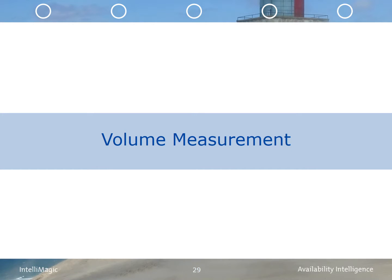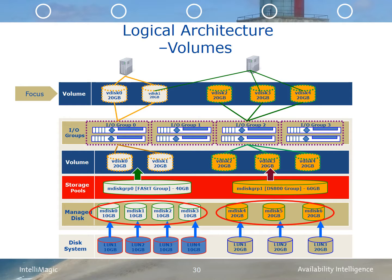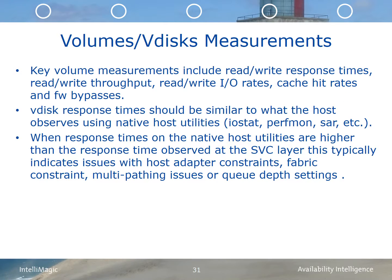In this section, we'll discuss the SVC VDISKs or volumes and their measurements. The volumes are provided by coalescing extents from storage pools. Hosts access the volumes through IO groups that they are zoned to. Key volume measurements include read-and-write response times, read-and-write throughput, read-and-write IO rates, cache hit rates, and fast-write bypasses. VDISK response times should be similar to what the host observes using native utilities like IOSTAT and SAR on Unix and PerfMon on Windows. When response times on native host utilities are higher than at the SVC layer, this typically indicates host adapter constraints, fabric constraints, multi-pathing issues, or possibly queue depth settings.